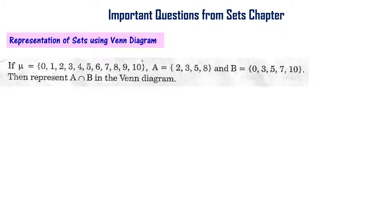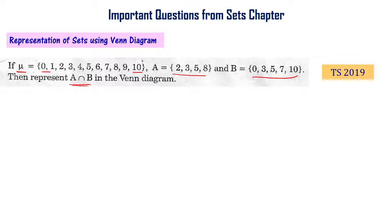Look at this question. If μ (mu) is the universal set with elements {0, 2, 10}, A is a set of elements {2, 3, 5, 8}, and B is a set of elements {0, 3, 5, 7, 10}, then represent A intersection B in the Venn diagram. This question was asked in the Telangana final exam in 2019.